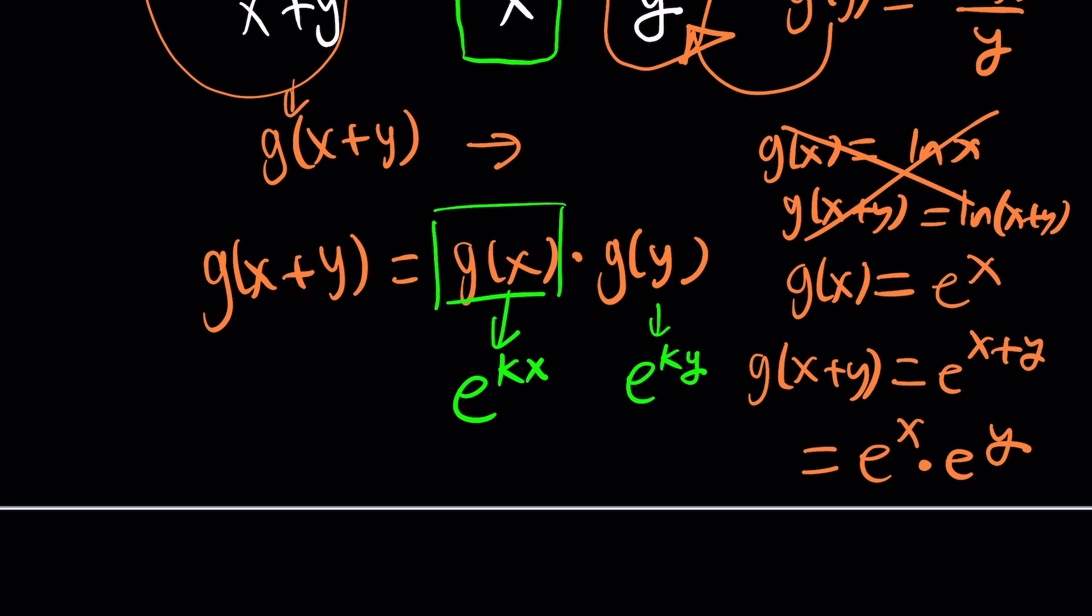Now, if g of x is e to the power of kx, which implies that g of x plus y is e to the power k times x plus y, which is e to the power of kx plus ky, which can be split into e to the kx times e to the ky, and boom. Yes, Houston, we have success. Great. Awesome. So, then, this works.